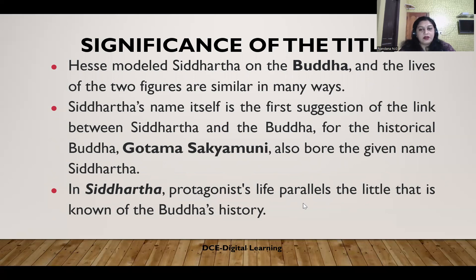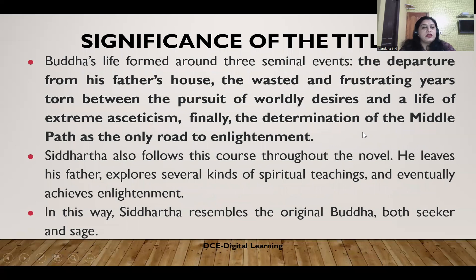In Siddhartha, the protagonist's life parallels the little that is known of Buddha's history. Buddha's life formed around three seminal events: the departure from his father's house; the wasted and frustrating years torn between the pursuit of worldly desires and the life of extreme asceticism; and finally, the determination of the middle path as the only road to enlightenment. Siddhartha also follows this course throughout the novel — he leaves his father, explores several kinds of spiritual teachings, and eventually achieves enlightenment. In this way, Siddhartha resembles the original Buddha who is both the seeker and the sage.